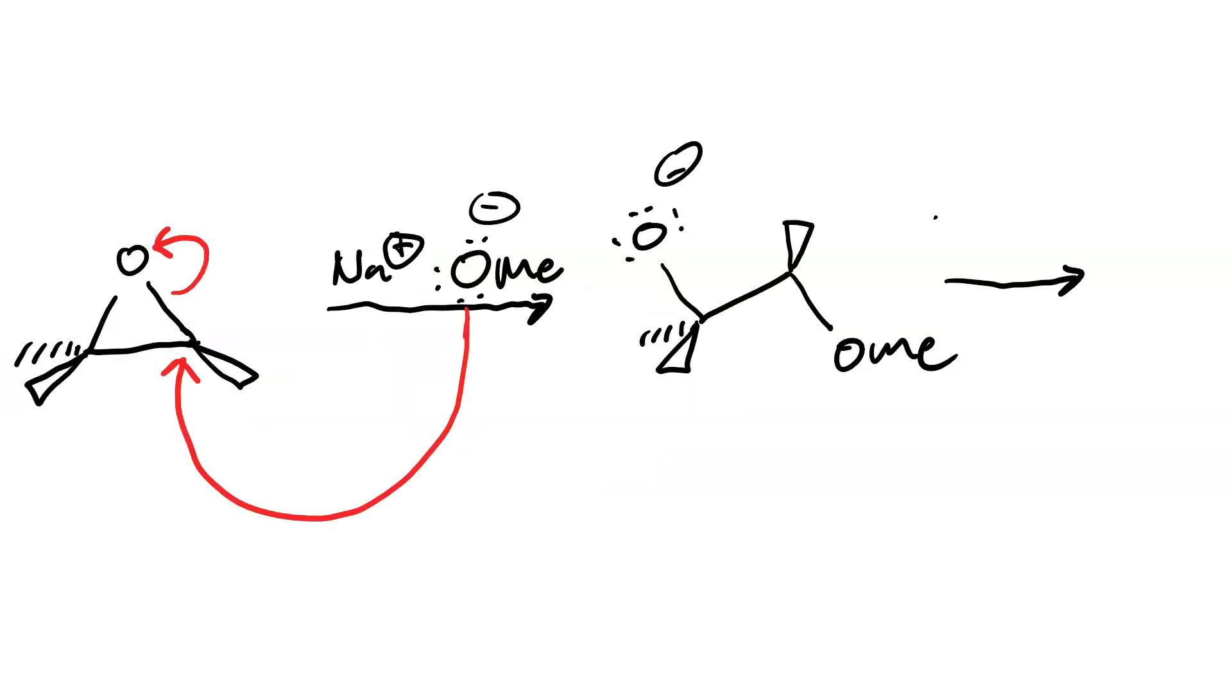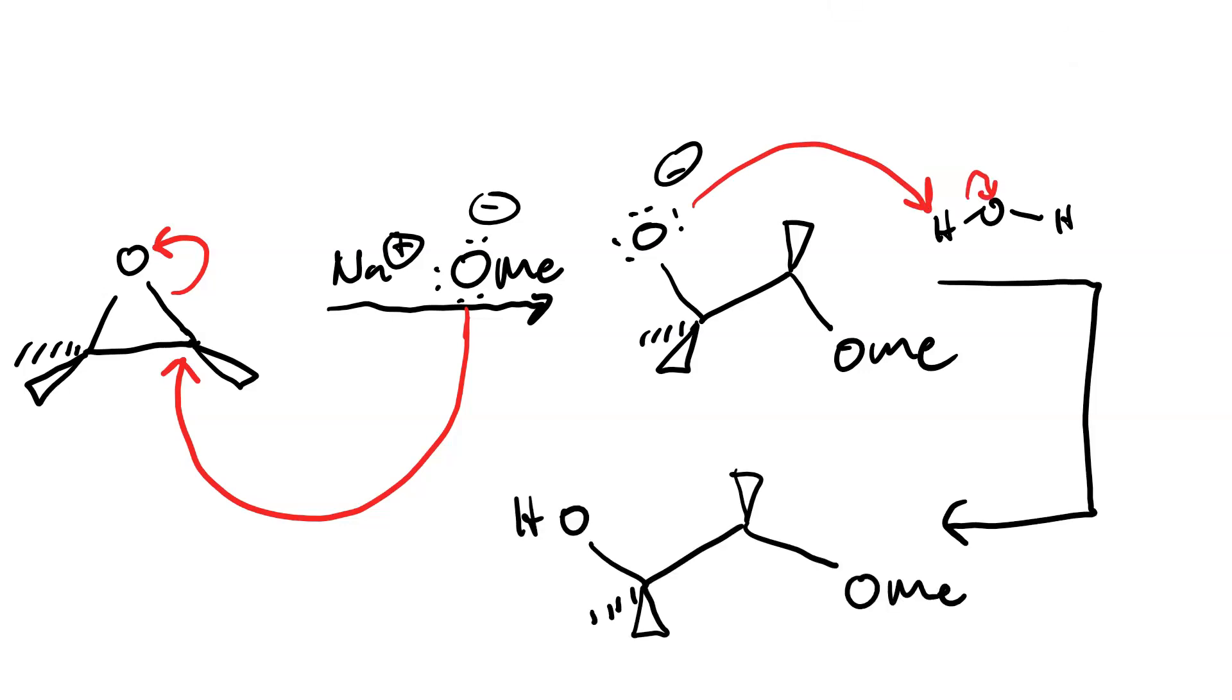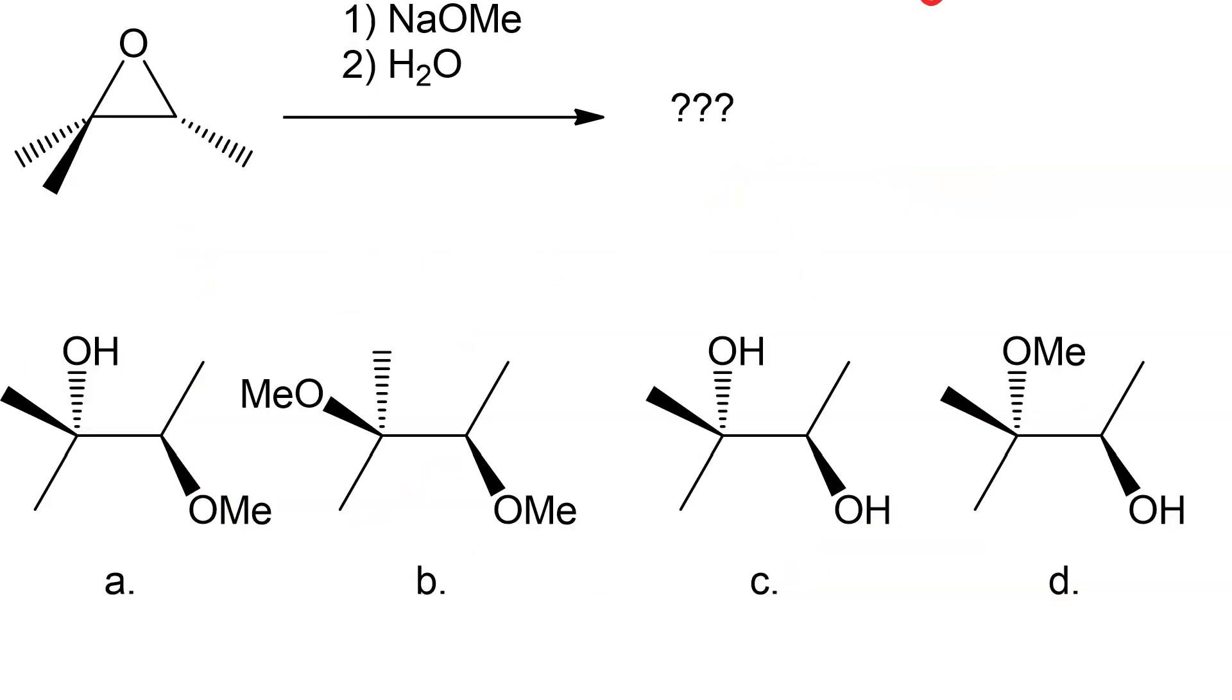Then in the second step, water will act as a weak acid to protonate the alkoxide. And here is our final product. A methoxy group, vicinal to an alcohol. So this corresponds to product A.